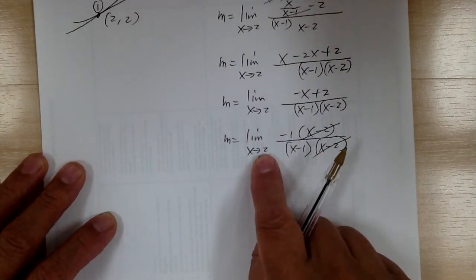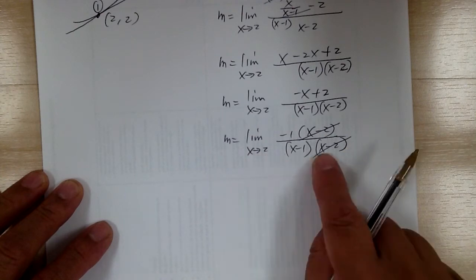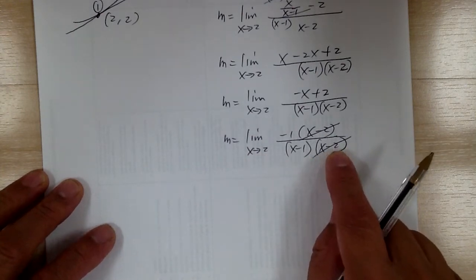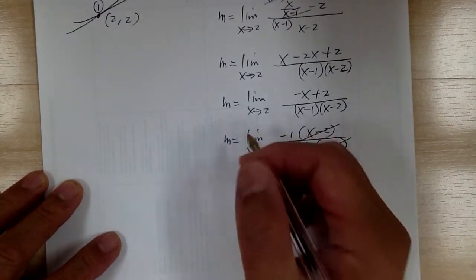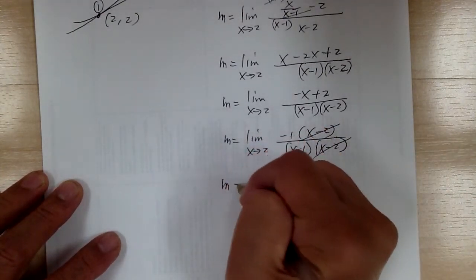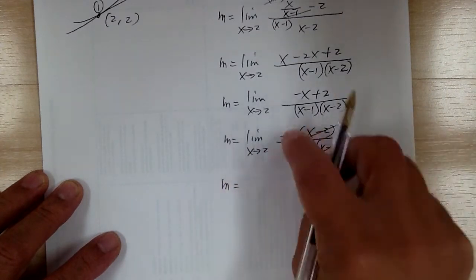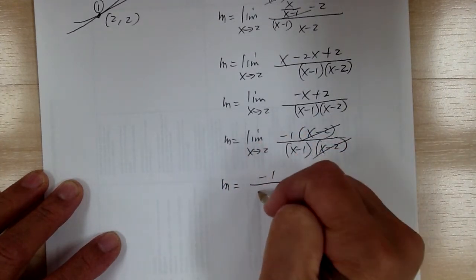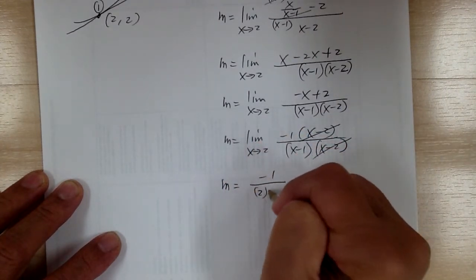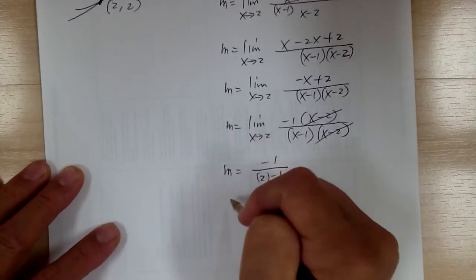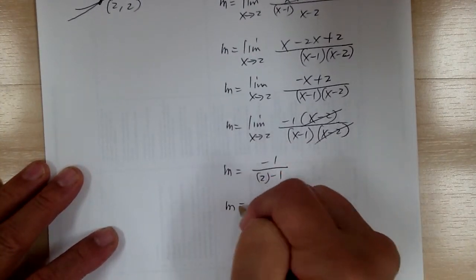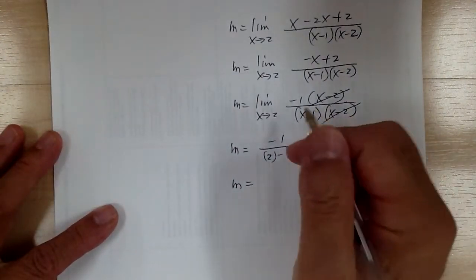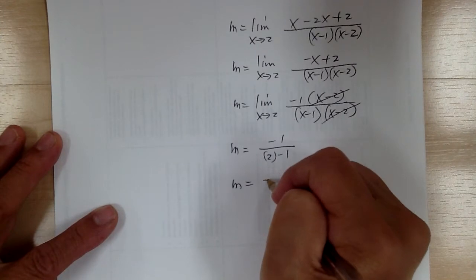Now, once you cancel out, you can substitute. Because before, if you substitute 2, you get 0. But once you cancel, you can substitute. Once you substitute, you can drop the limit. So you get negative 1 over 2 minus 1. Slope equals negative 1.